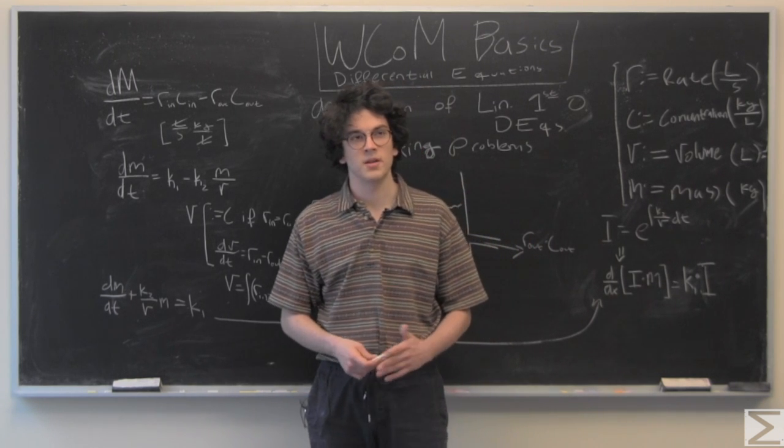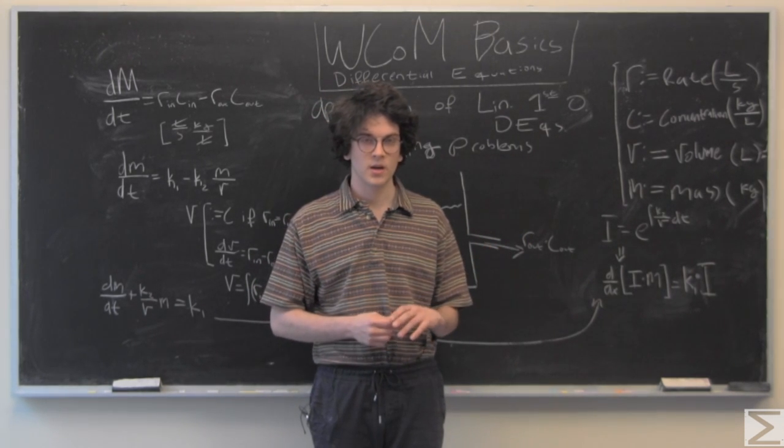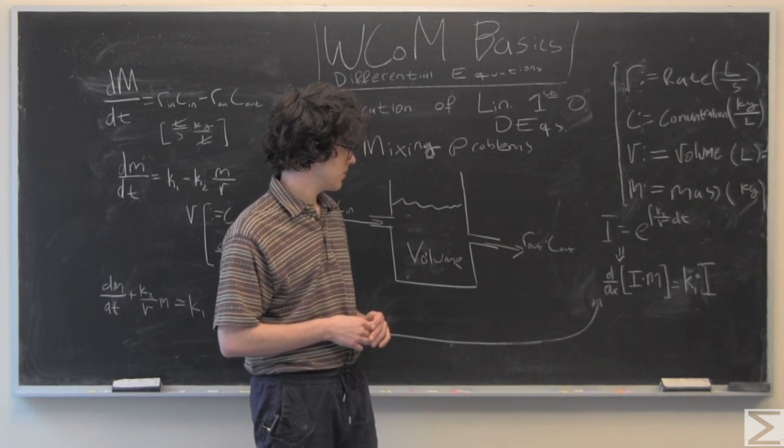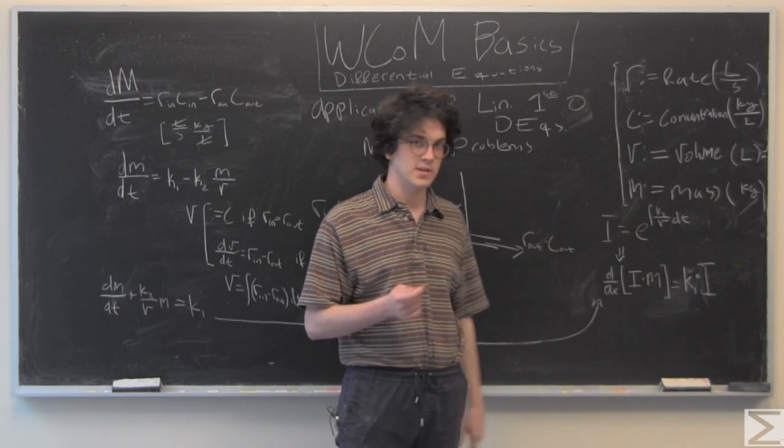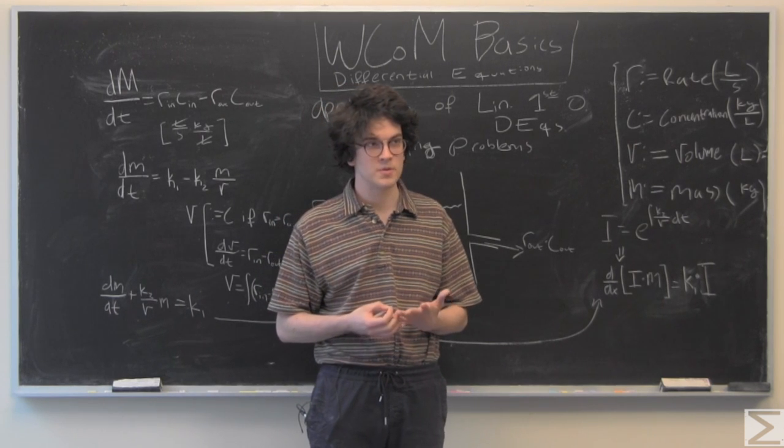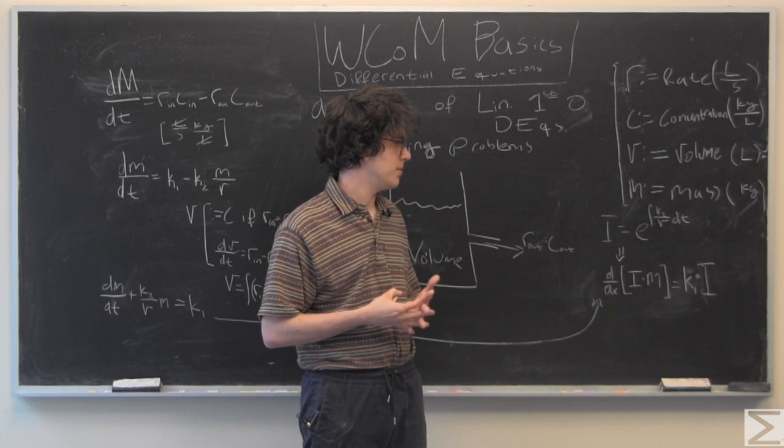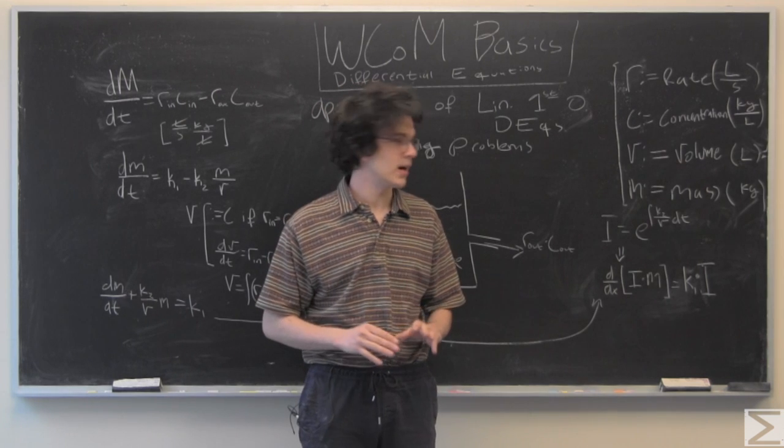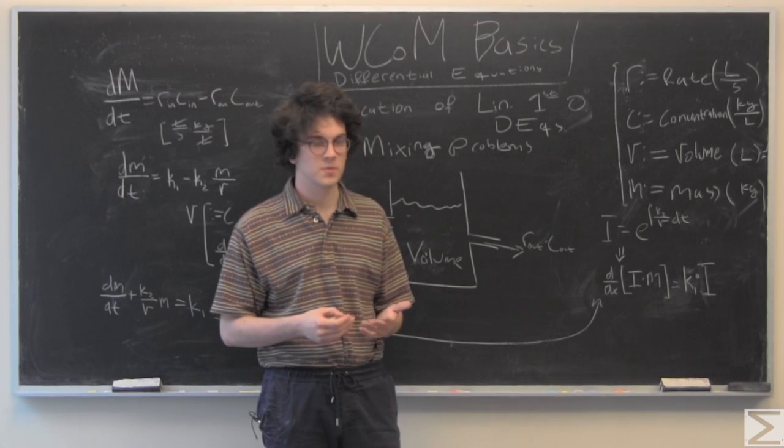We're not going to have a function like sine or whatever as we did in the previous video. So, we have our integrating factor is e to the integral of k2 over v dt. v might be constant, in which case your job is very easy. v also could be some function of time, in which case it's not so easy. But we'll cross that bridge when we get to it.